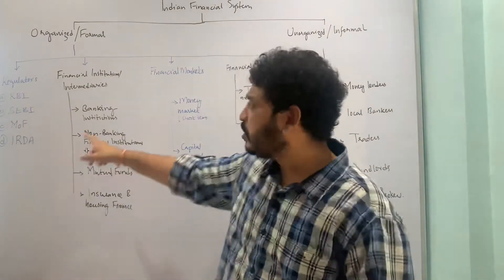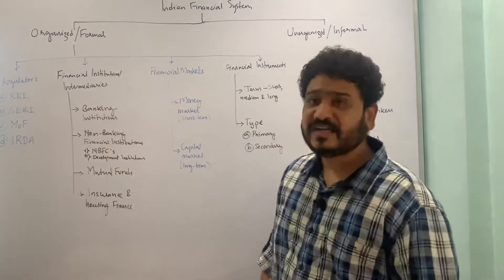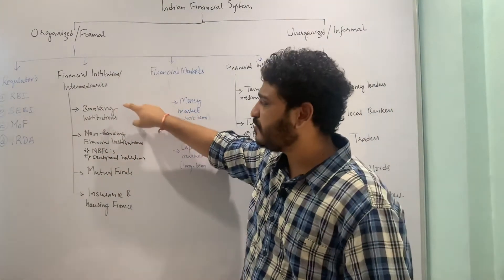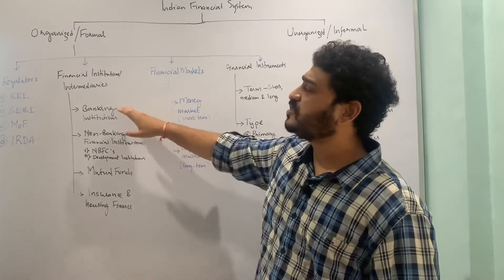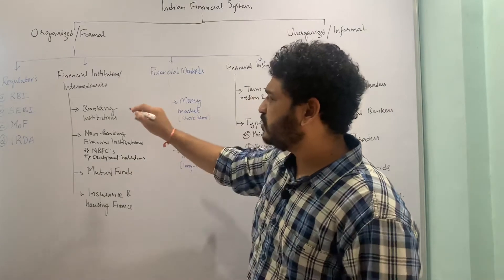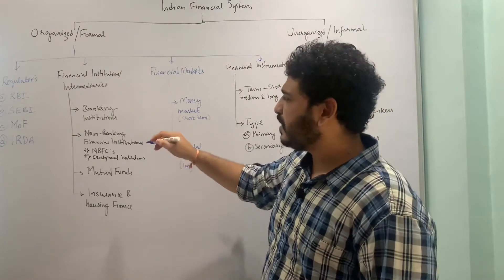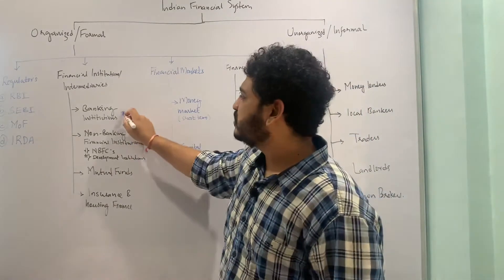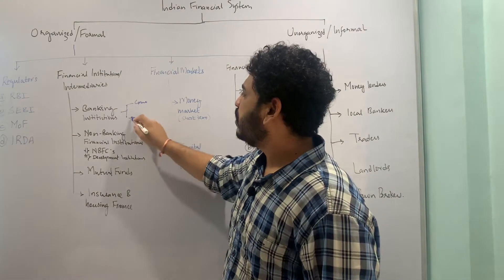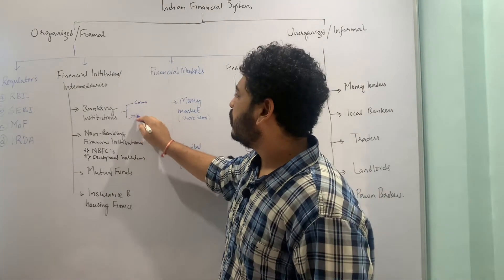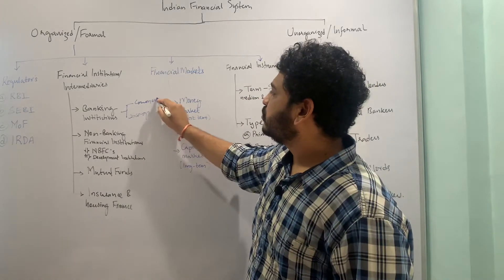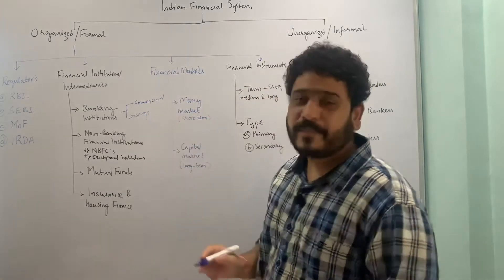Let us now move to financial institutions or intermediaries. These can be seen from four different perspectives. The first is banking institutions. Banking institutions can be either commercial or cooperative — scheduled commercial, non-scheduled, and things like that. In later lectures, I will talk about banking institutions in greater detail.